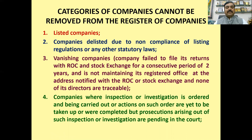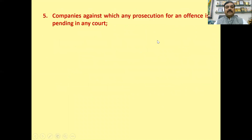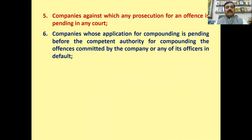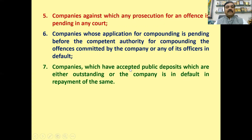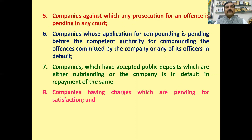Next category is companies where the inspection or investigation is ordered and being carried out, and actions on such order are yet to be taken or were completed but prosecution is pending before the court. Next category is companies against which any prosecution for an offense is pending in any court. Next is companies where the application for compounding is pending before competent authorities. Companies which have accepted public deposits which are either outstanding or where the company is in default of repayment. Companies having charges which are yet to be satisfied, and not-for-profit charitable companies registered under Companies Act 1956 or Companies Act 2013.